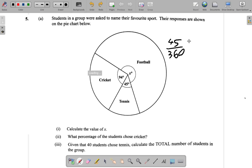Now, if 45 out of 360 represents 40, then you're going to find out what's the total number of students in the group. Let's say 45 out of 360 multiplied by the total number of students in the group will give you 40 students.